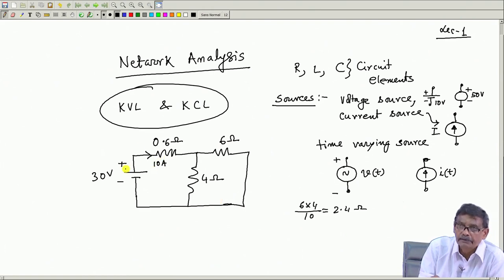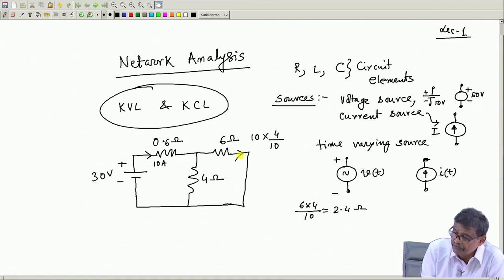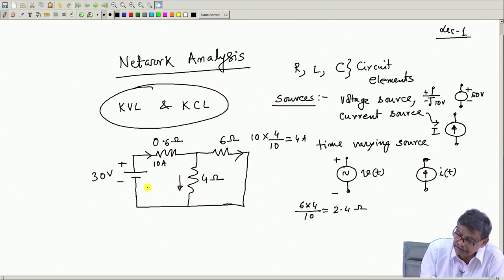Using the current divider rule, for the parallel branches: the current through the 4 ohm branch is total current × 6/(6+4) = 10 × 6/10 = 6 ampere, and the current through the 6 ohm branch is total current × 4/10 = 4 ampere.